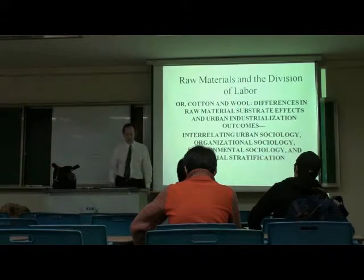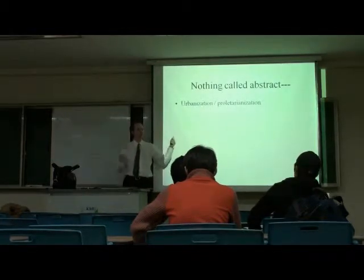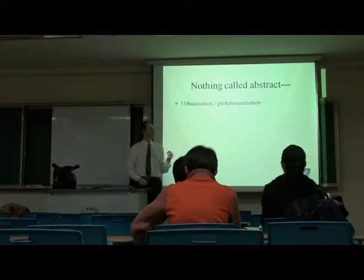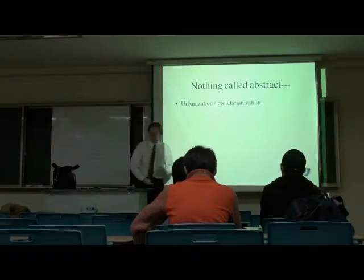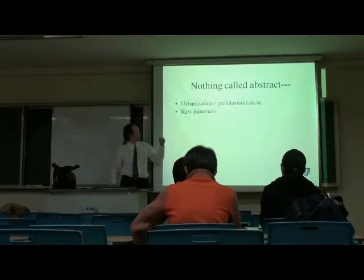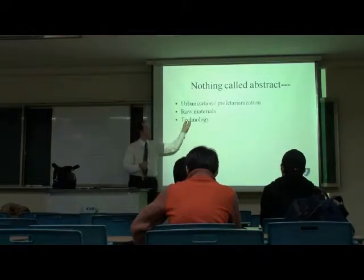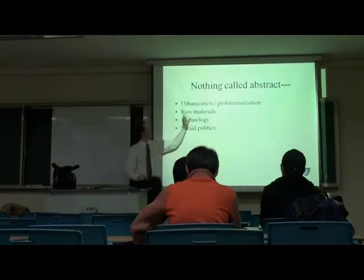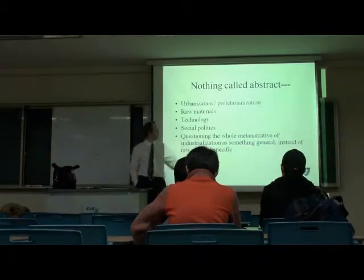I look in East Asia, and I look at abstract urbanization. We need to think of it as environmentally connected. There's no abstract proletarianization. Karl Marx describes capital versus labor, but I say it's capital versus labor in a particular material. We need to think about the environmental context of proletarianization. There are no abstract raw materials — there are specific physical qualities. There's no abstract technology; technology is exclusively connected to a certain raw material. There is no abstract politics — politics is connected to a certain material too. I question the whole big idea of a metanarrative of industrialization as something general instead of raw-material-specific.